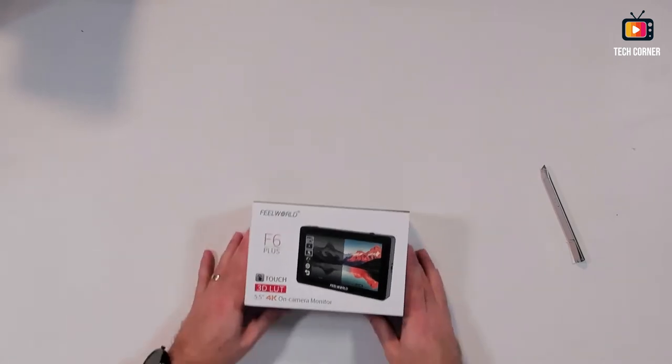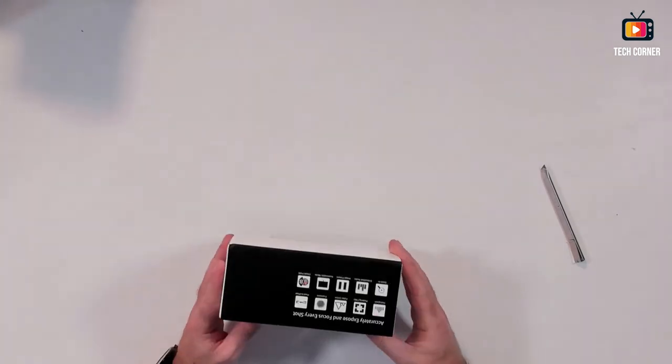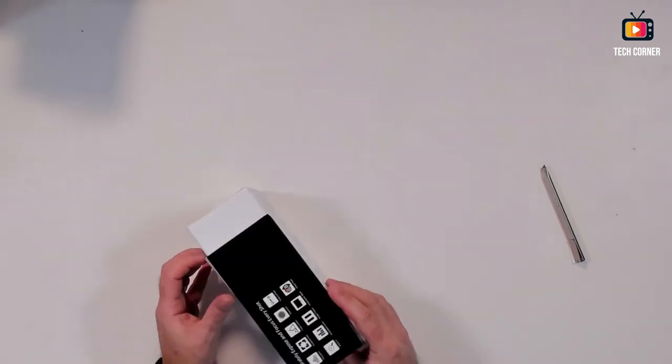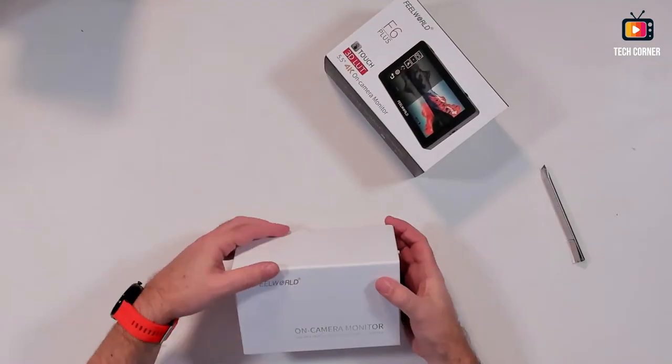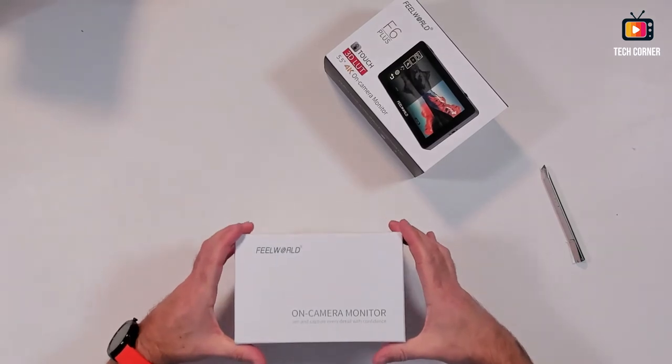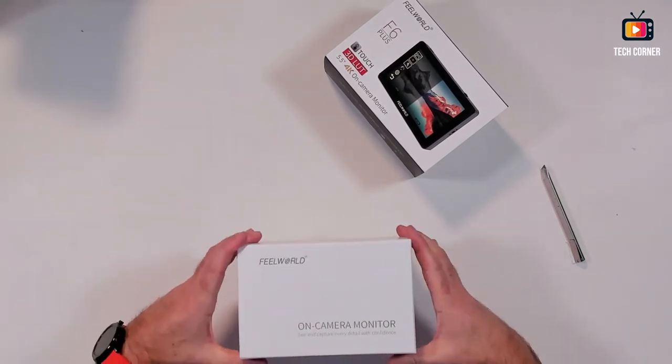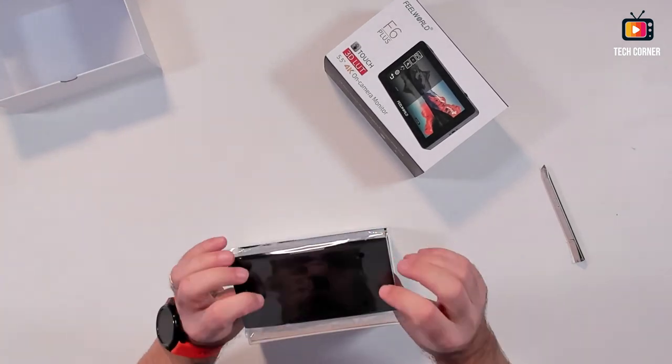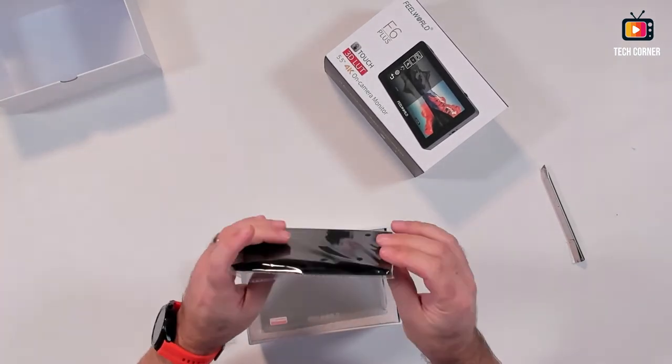And what's in the box. Let's see what's in the box. So let's start by opening this. We have a shadow protection.